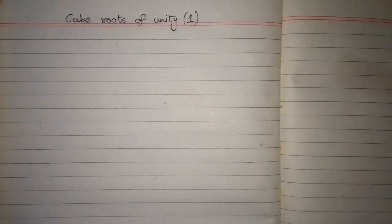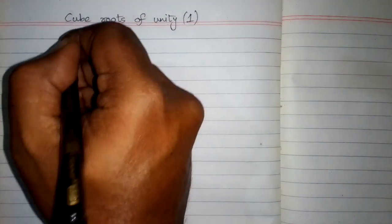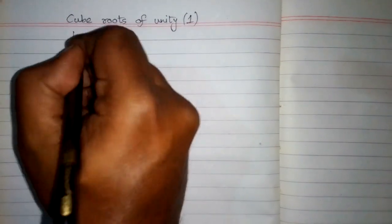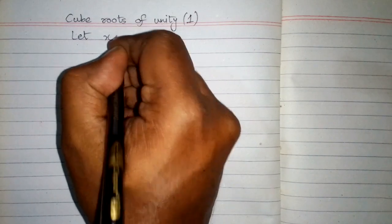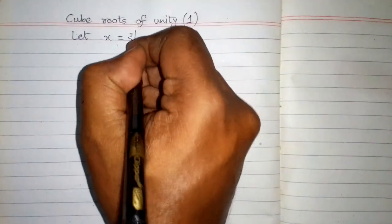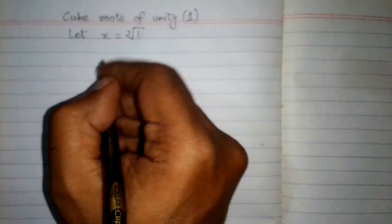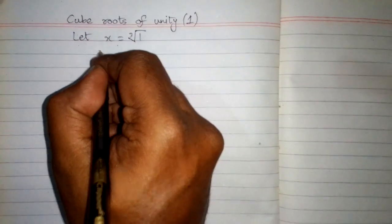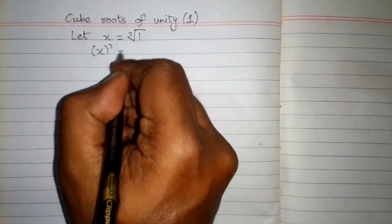In this video we will find the cube roots of unity, or cube roots of 1. First, we will let x be equal to the cube root of 1, then we will take the cube of both sides.